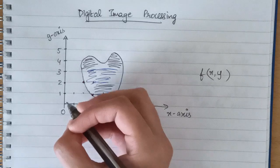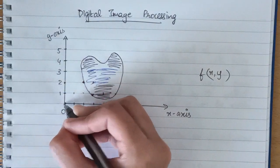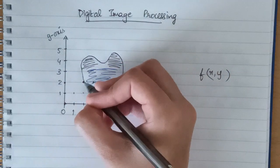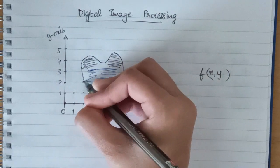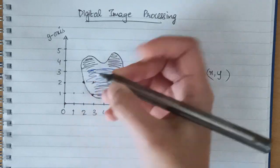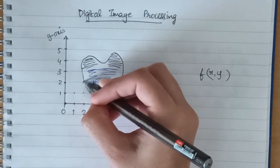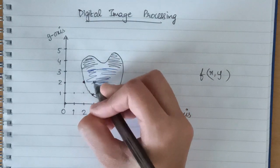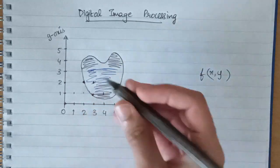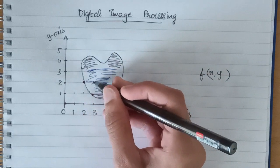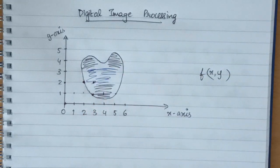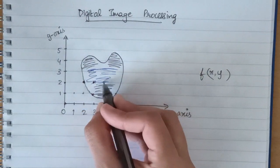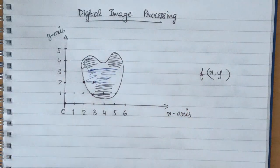If you look at f of zero zero, it doesn't have any intensity, it doesn't have any value, so it's zero. But if you look at this point f of two two, it has a high intensity because at that point we have a black color. Similarly, if you look at this point f of three two, it has a lesser value because it is represented with blue color which is a lighter shade. So each of these points have certain intensity values.